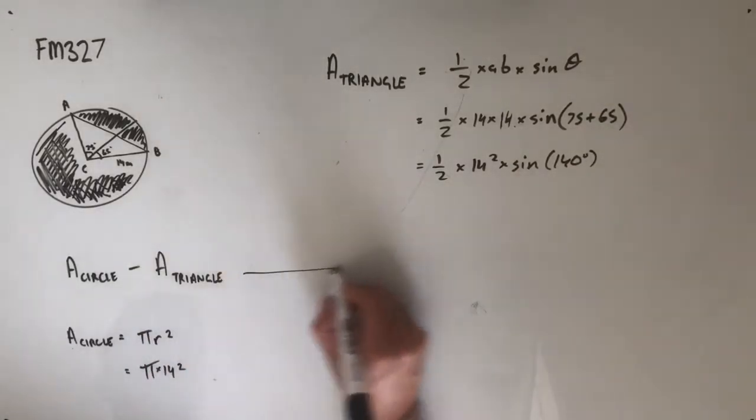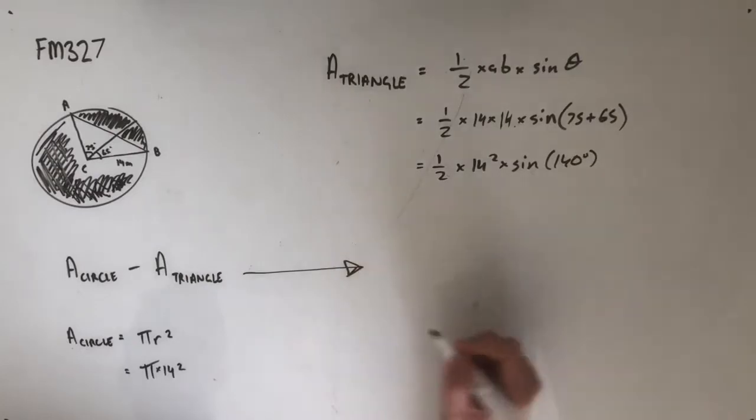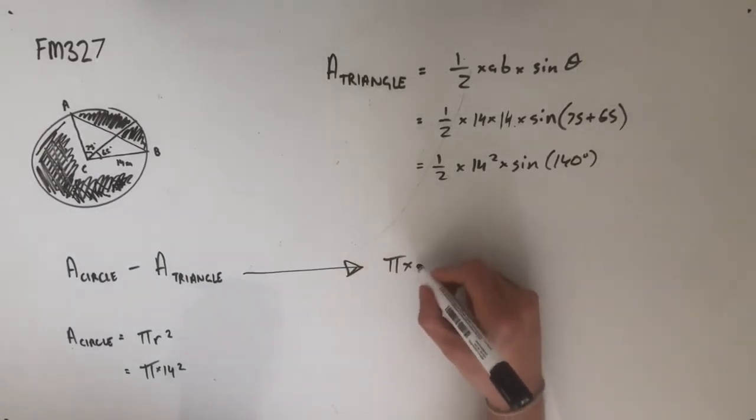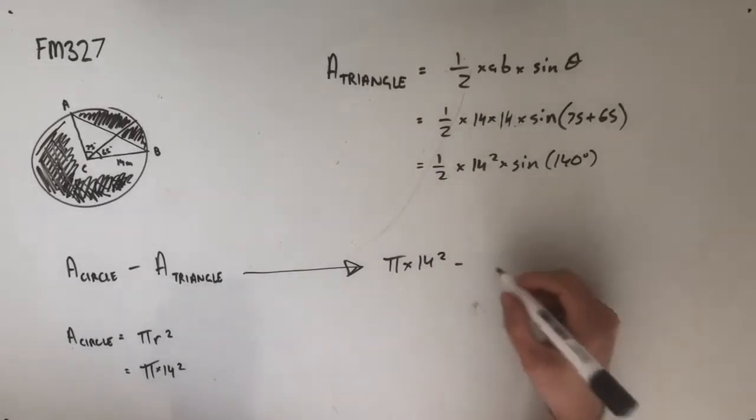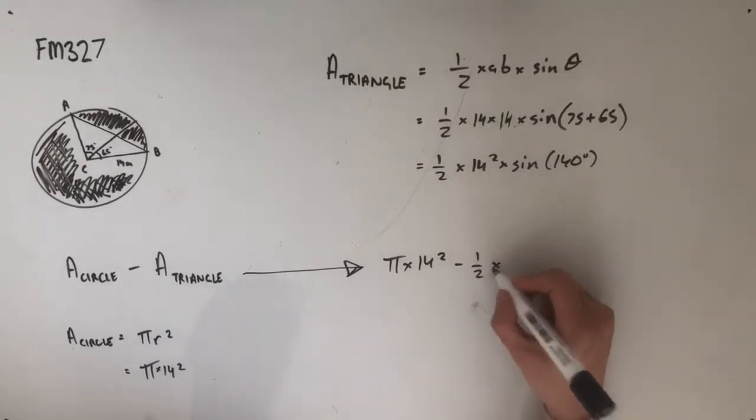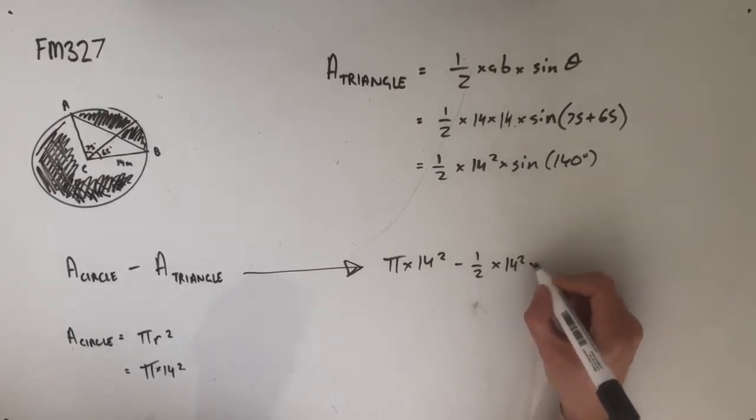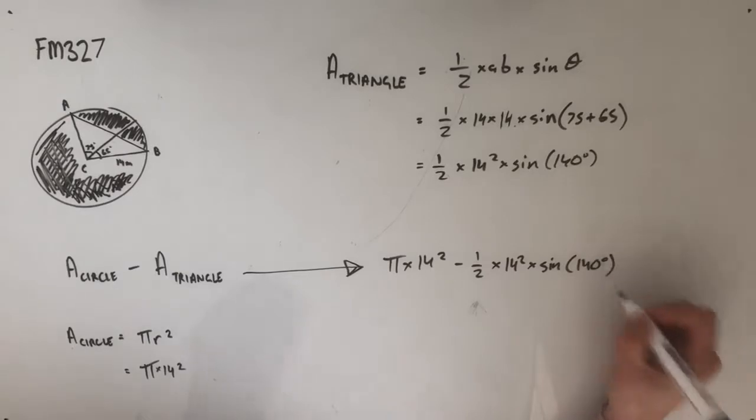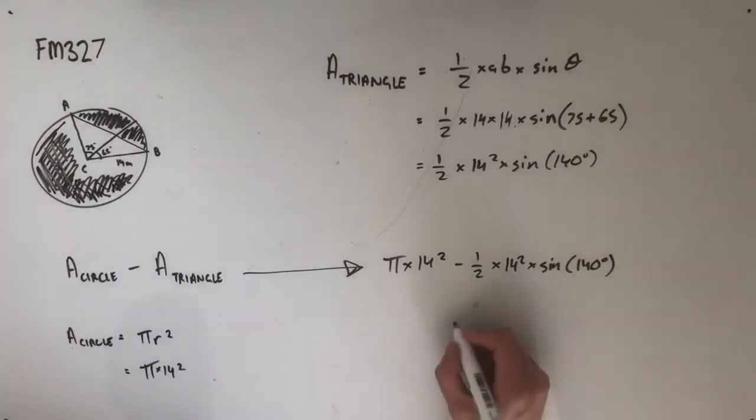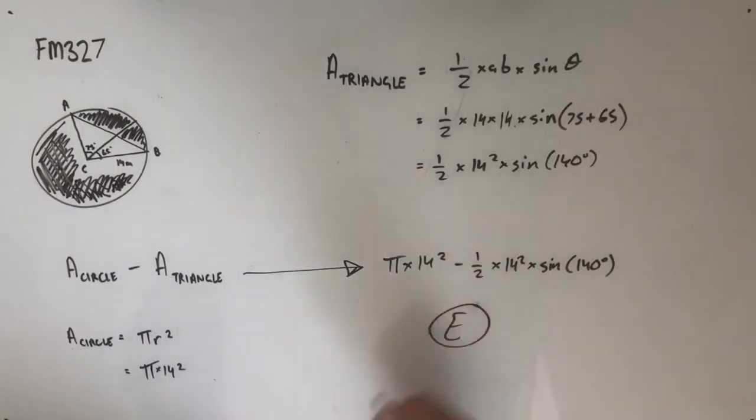And then going back to our original little formula over here, we would get the area of our circle, which is pi times 14 squared, minus the area of our triangle, which is half 14 squared sine 140 degrees. Having a look at this, we can see that it is option A.